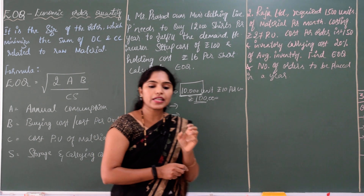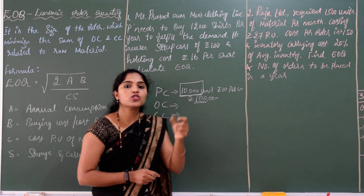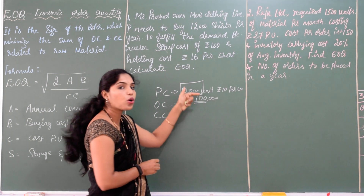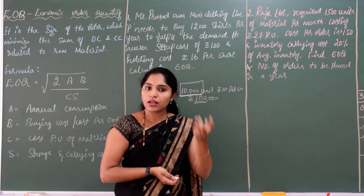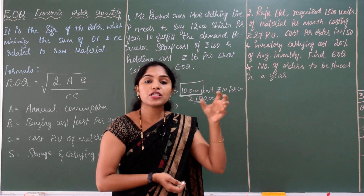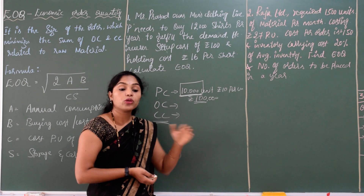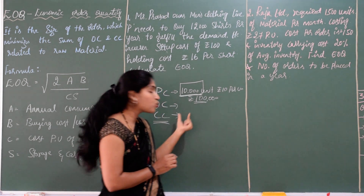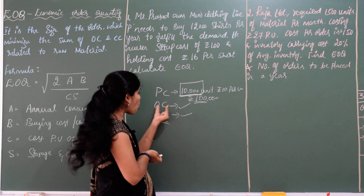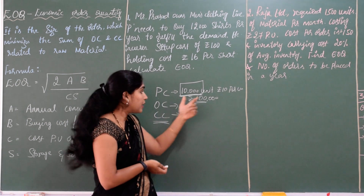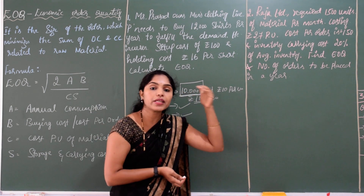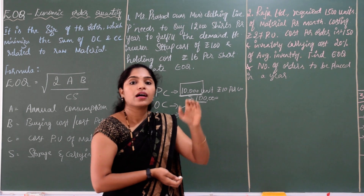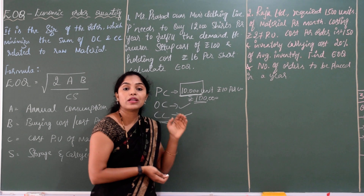Carrying cost is the cost of storage of raw materials in a godown or warehouse. After purchasing 10,000 units, you need to store them and pay rent for the warehouse, insurance on the stock, and taxes. Carrying cost increases in proportion to purchasing cost — the more you purchase, the higher the carrying cost. If you purchase less quantity, the ordering and carrying costs will also be less.